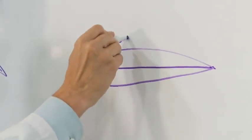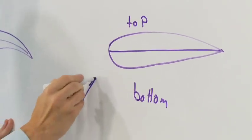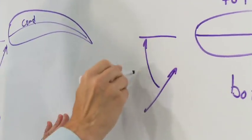So this is the top of the airfoil. This is the bottom. And again, it has an angle of attack defined like this, alpha.